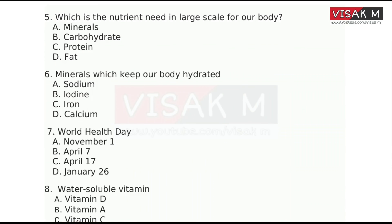Moving on to the fifth question: Which is the nutrient needed in large scale for our body? Options: A. Minerals, B. Carbohydrate, C. Protein, D. Fat. The right answer is Option B — Carbohydrate.